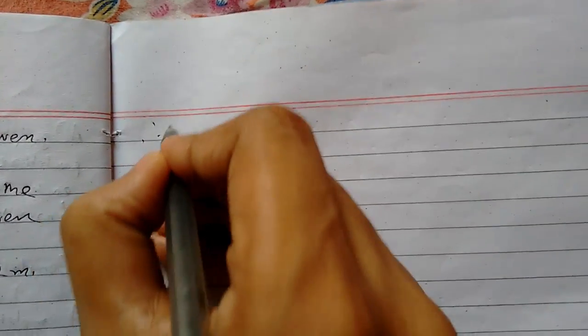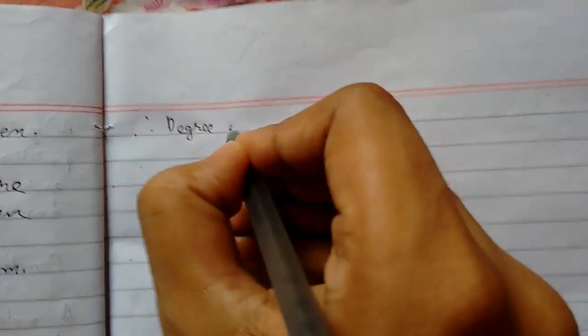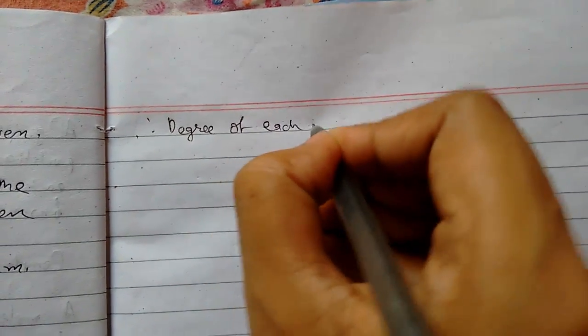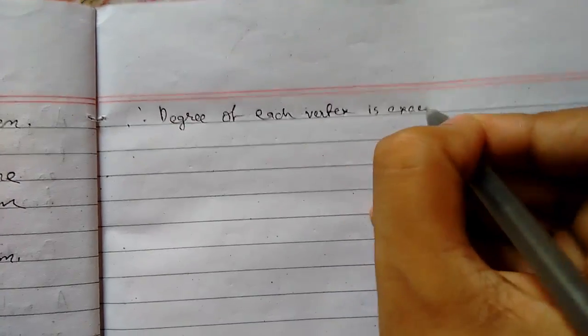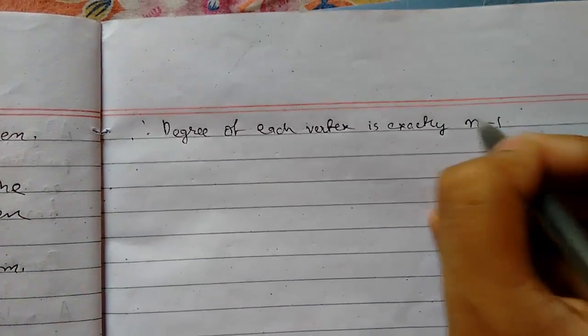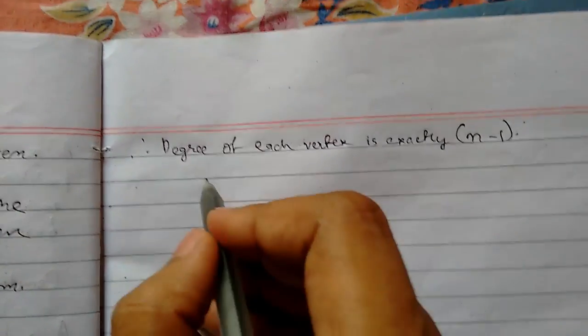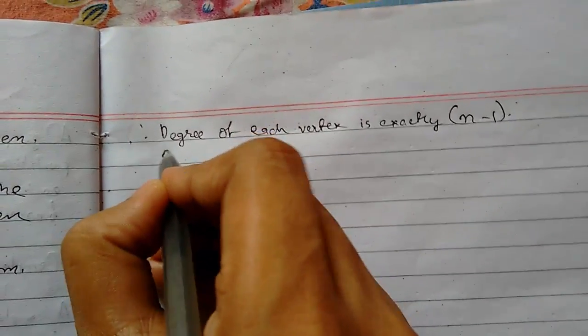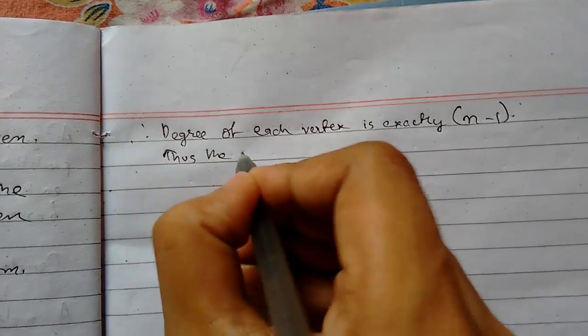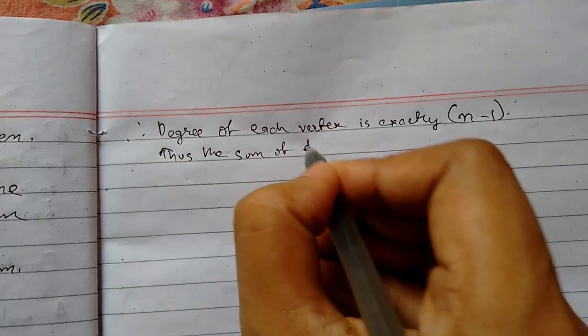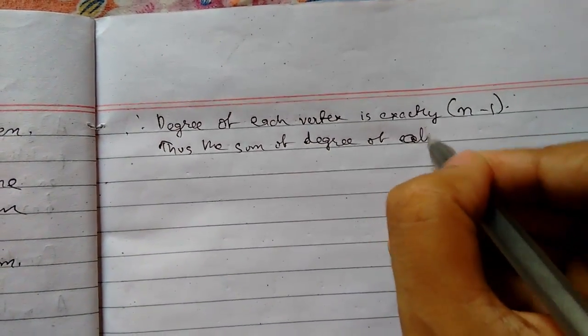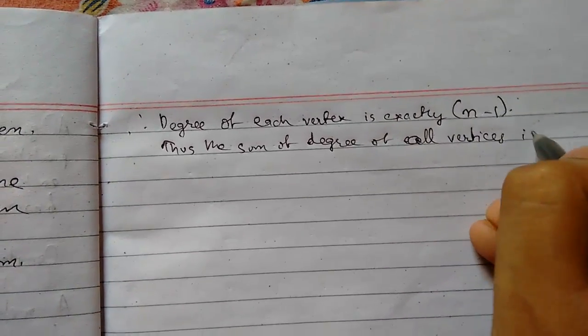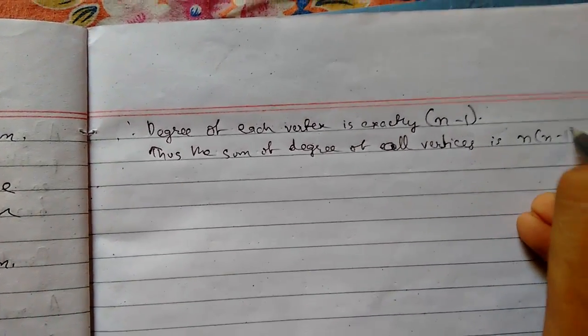So therefore degree of each vertex is exactly n minus 1 because n minus 1 vertices are connected. Now the sum of degree of all vertices is n into n minus 1.